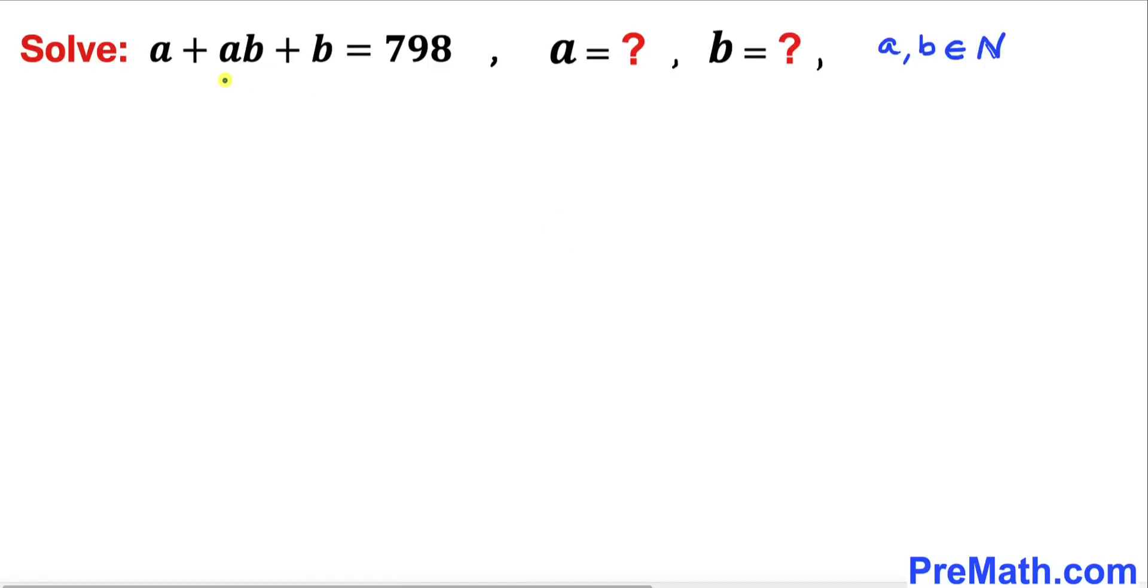Welcome to pre-math. In this video we are going to solve this equation: a plus a times b plus b equals 798. In other words, we are going to find the values of a and b where a and b are natural numbers.